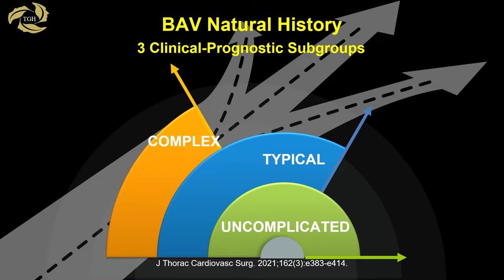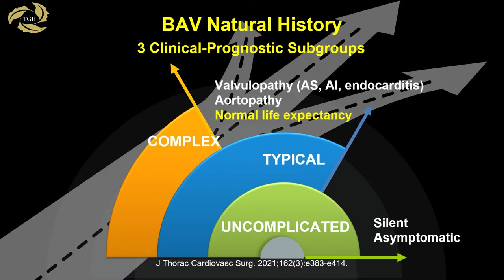Bicuspid aortic valve can be broadly categorized into three clinical prognostic subgroups: uncomplicated, typical, or complex. Uncomplicated is a retrospective diagnosis as disease is silent and patients are asymptomatic. In typical, aortic valve function generally deteriorates over time, causing a valvulopathy — aortic stenosis, aortic regurgitation, mixed, or even endocarditis. In addition, up to 30 percent of patients have an aortopathy, presenting with aortic dilatation or more acutely with aortic dissection. Patients managed appropriately have a normal life expectancy in this group.